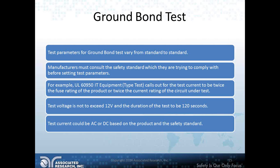The test voltage must not exceed 12 volts, and the duration should not exceed 120 seconds, since this is a high current test. The test current can be AC or DC depending on the product and safety standard — for example, solar panels may require DC ground bond testing.